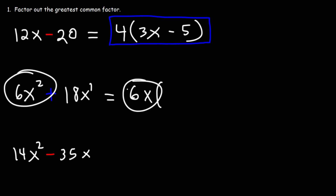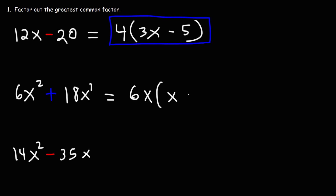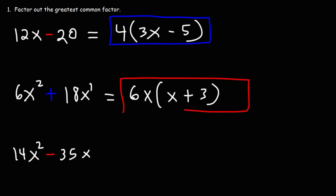6x squared divided by 6x is x. 18x divided by 6x is positive 3. So the answer is 6x times x plus 3.